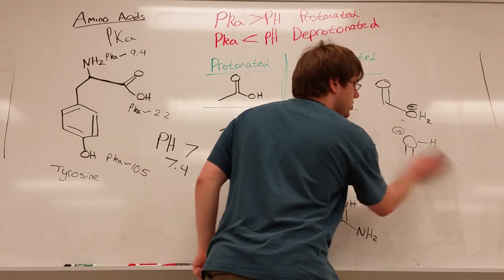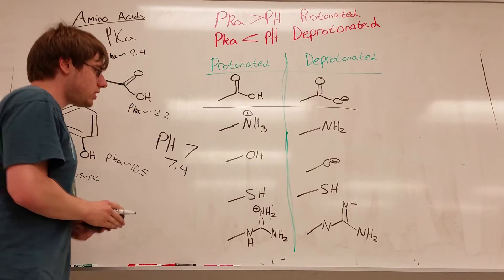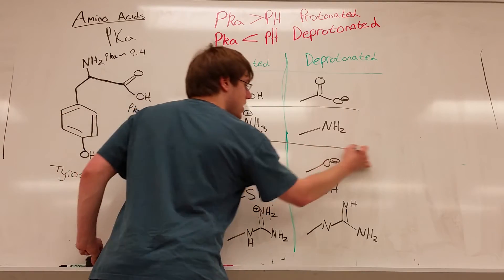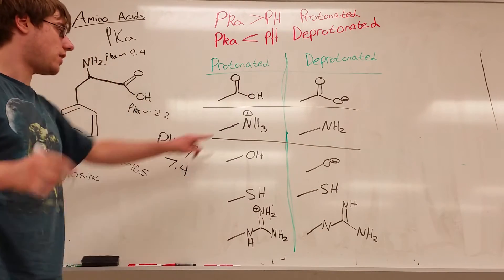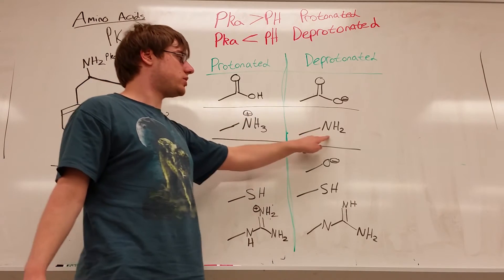This is the most protonated an amino acid's carboxylic acid will ever be. And then its deprotonated form is just one hydrogen left. The OH becomes an O-.